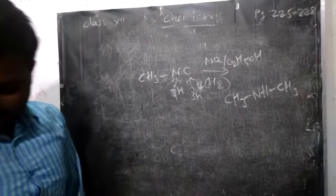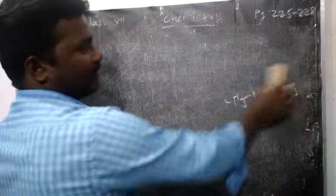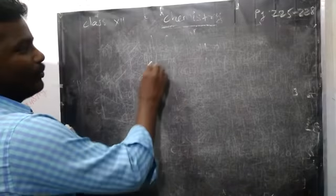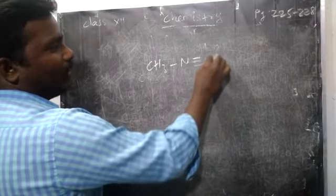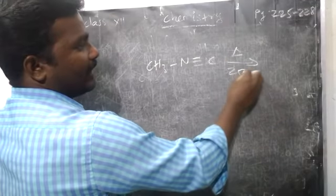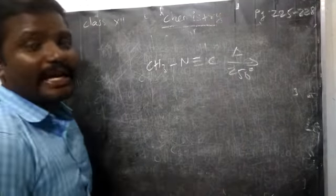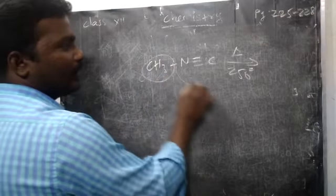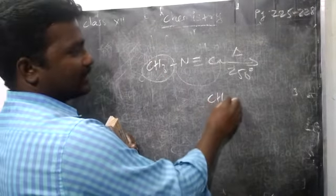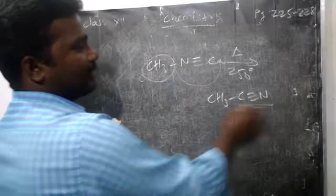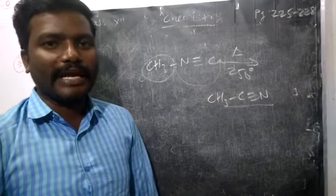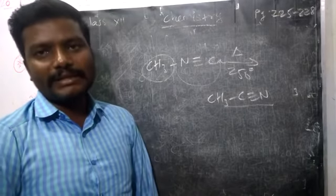The next chemical property: on heating at 250°C, isocyanide will give cyanide compound. CH3, N≡C compound, on heating at 250°C, will undergo rearrangement. The methyl group will shift towards carbon. So CH3, C≡N — cyanide compound is formed. So if you want to convert isocyanide to cyanide, you can heat at 250°C.